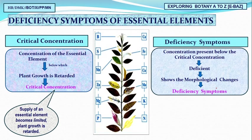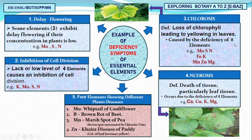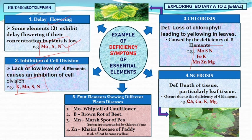We studied critical concentration — below that critical concentration we have deficiency syndromes that appear as morphological changes. Four important deficiency syndromes with easy mnemonics: motion for delayed flowering, motion for inhibition of cell division, motion fake munchan for chlorosis, and necrosis caused by four elements: Ka, Ku, Ke.